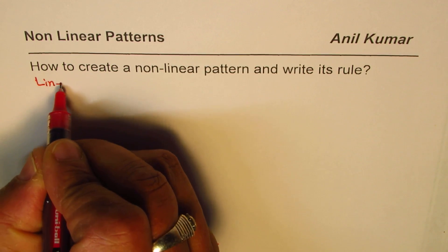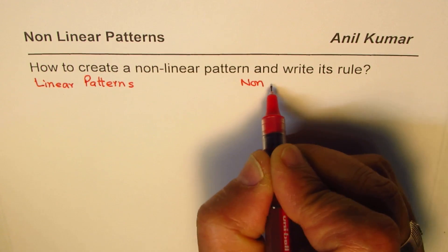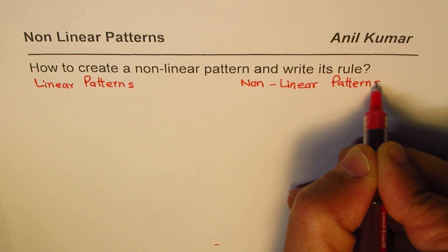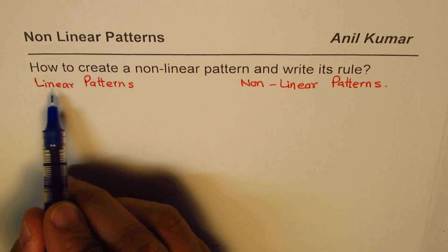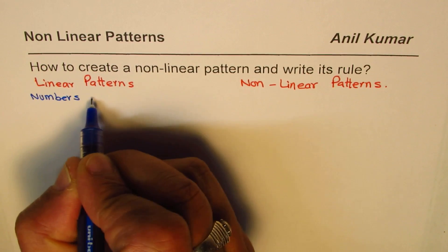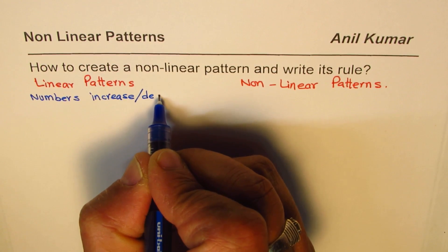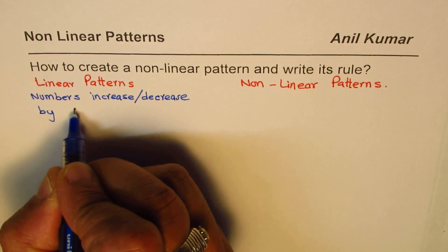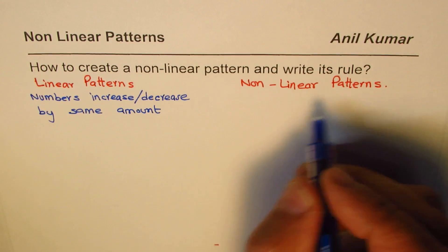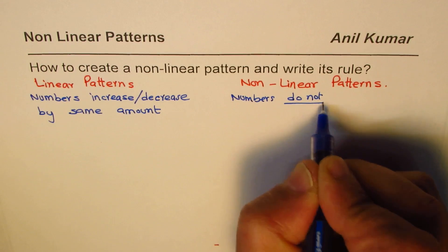We'll first talk about linear patterns and then nonlinear patterns. A linear pattern is one in which numbers increase or decrease by the same amount. Nonlinear means numbers do not increase or decrease by the same amount — that is the major difference.